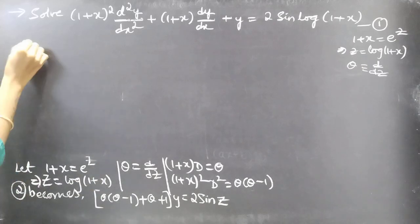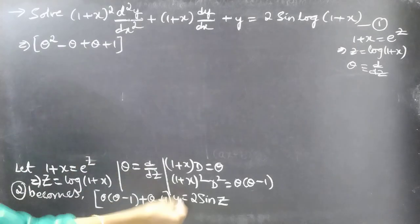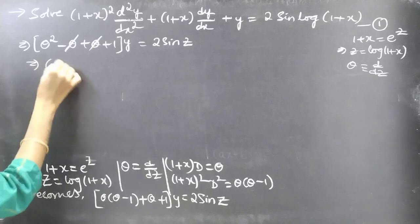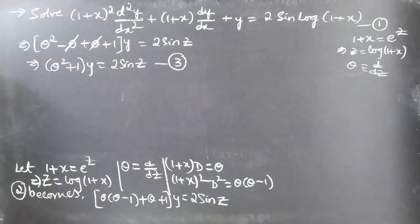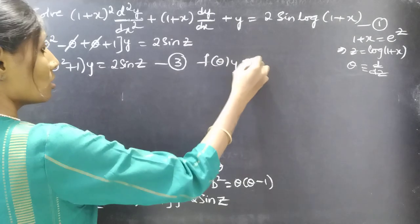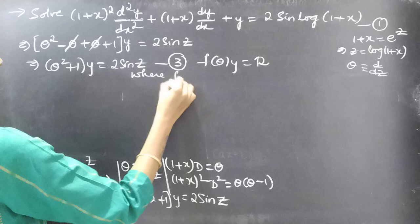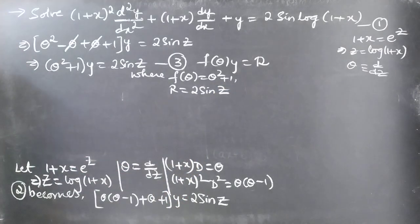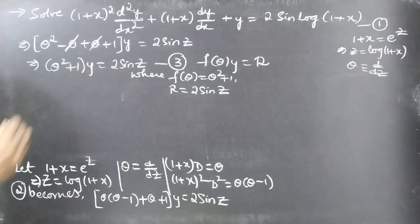After substitution, equation 2 becomes [θ(θ − 1) + θ + 1]y = 2 sin z. Expanding: θ² − θ + θ + 1 = θ² + 1, so the −θ and +θ cancel. The reduced equation becomes (θ² + 1)y = 2 sin z. Consider this as equation number 3, which is in operator form f(θ)·y = R, where f(θ) = θ² + 1 and R = 2 sin z. We have successfully reduced the Legendre's equation to a linear differential equation with constant coefficients.